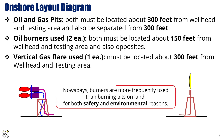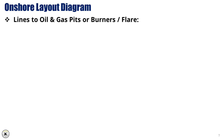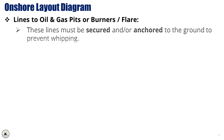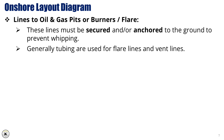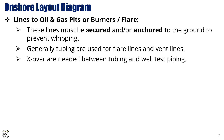Nowadays, burners are more frequently used than burning pits on land, for both safety and environmental reasons. The lines connecting to the oil and gas pits, burners, or flare must be properly secured and anchored to the ground to prevent them from whipping or becoming a safety hazard. This is critical to avoid any movement that could lead to damage or accidents. Tubing is typically used for flare lines and vent lines, as it is durable and capable of handling the pressures and conditions present during well-testing operations. Crossover connections are necessary between tubing and well-test piping, providing the proper interface between different piping systems and ensuring safe, leak-free connections.